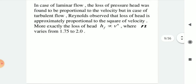In the case of laminar flow, the loss of pressure head was found to be proportional to the velocity. But in the case of turbulent flow, Reynolds observed that the loss of head is approximately proportional to the square of velocity. More exactly, the loss of head HF is directly proportional to V raised to n, where n varies from 1.75 to 2.0.